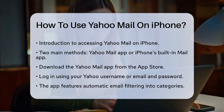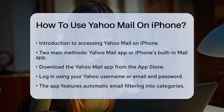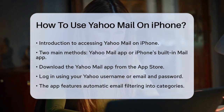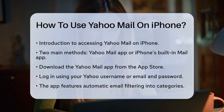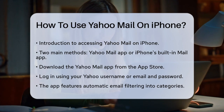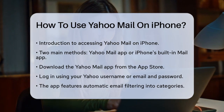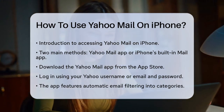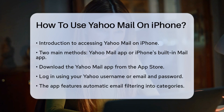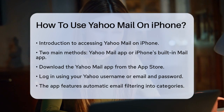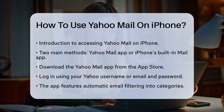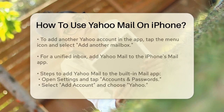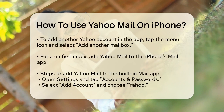Using the Yahoo Mail app. To start, you can download the Yahoo Mail app from the App Store. Once you've downloaded and installed it, open the app and log in with your Yahoo username or email address and password. This app offers some handy features, such as automatic email filtering into categories like subscriptions, receipts, and travel.